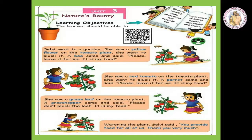In this chapter, we are going to learn how to observe, identify, name, understand and describe the importance of leaves, flowers, vegetables and fruits. Here is a story. Come on, let us read it.